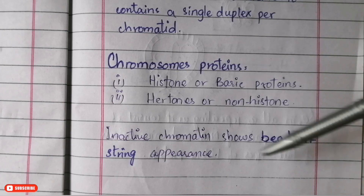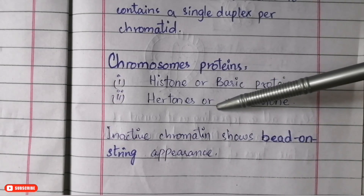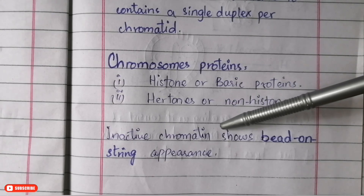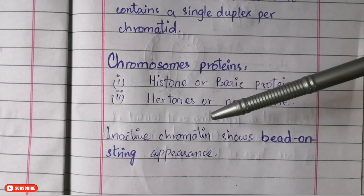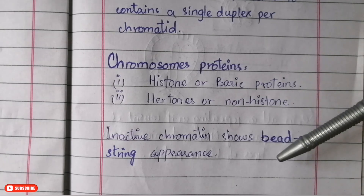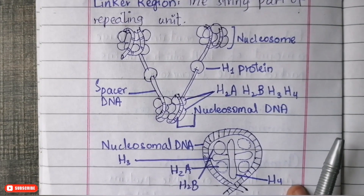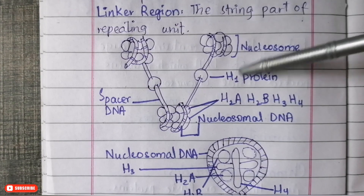The term 'bead on string' is very important to keep in mind. Whenever we talk about chromatin folding or the DNA present on the chromatid or chromosome, we will see this term very often. The DNA and the proteins present on the chromosomes are arranged in the form of beads on a string.